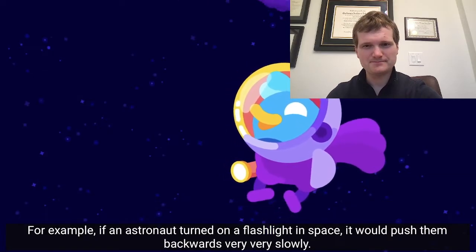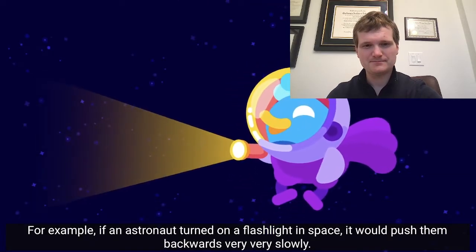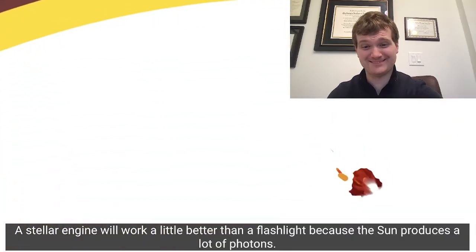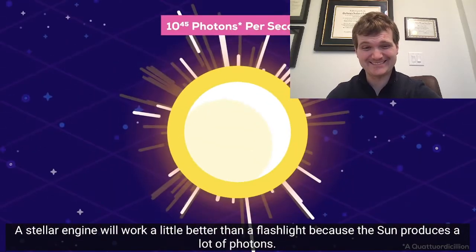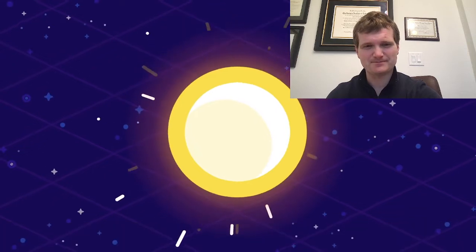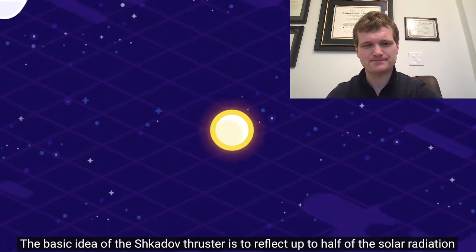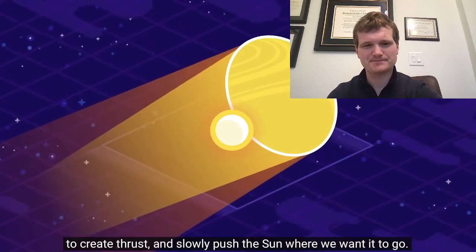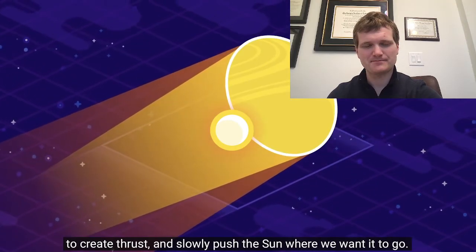For example, if an astronaut turned on a flashlight in space, it would push them backwards very, very slowly. A stellar engine will work a little better than a flashlight because the sun produces a lot of photons. The basic idea of the Shkadov thruster is to reflect up to half of the solar radiation to create thrust and slowly push the sun where we want it to go.